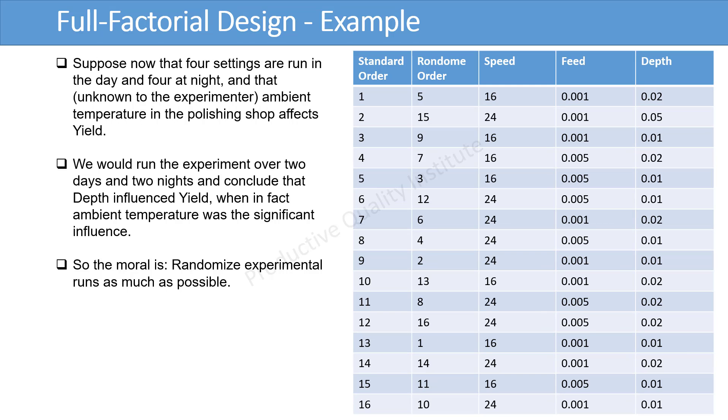Suppose now that 4 settings are run in the day and 4 at night, unknown to the experimenter, ambient temperature in the polishing shop affects yield. We would run the experiment over 2 days and 2 nights and conclude that depth influenced yield, when in fact ambient temperature was the significant influence. So the moral is, randomize experimental runs as much as possible.